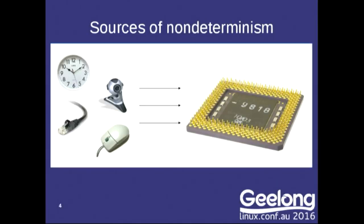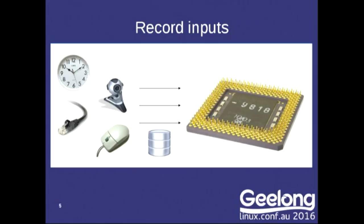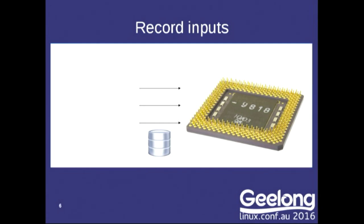We throw a ton of non-determinism back into the system. We have non-determinism coming from timing, from sensors, from the network, inputs from the user — various sources of information flooding in and causing the CPU to behave differently every time you run your software. One idea would be: what if we could record all those inputs as they're coming into the CPU? Then we could try rerunning the software again, but instead of using the real inputs, we could replay those inputs from storage. Because the CPU is deterministic, we would get the same execution again — and that would let us debug some of these problems.